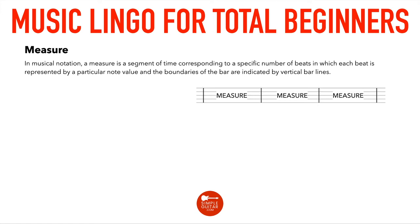Each measure is going to have a certain number of beats. In most music you hear, every measure has four beats — you could count one, two, three, four, one, two, three, four. 'Bar' is the same thing as a measure, just one less syllable to say. A bar is a measure and a measure is a bar — it's the exact same thing.